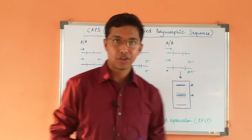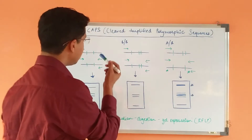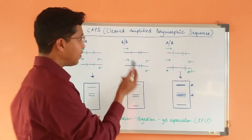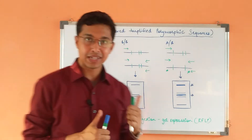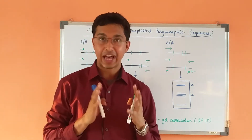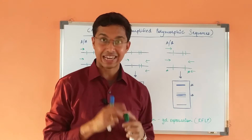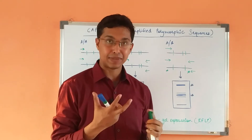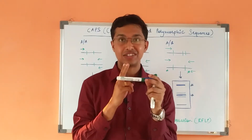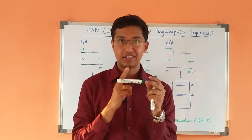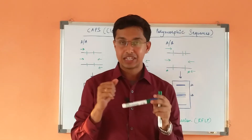Hello friends, today we will learn about Cleaved Amplified Polymorphic Sequences Assay. CAPS assay is based on RFLP — restriction fragment length polymorphism. What exactly happens in CAPS assay? The amplified DNA product gets cut by restriction endonucleases and it gives various patterns.